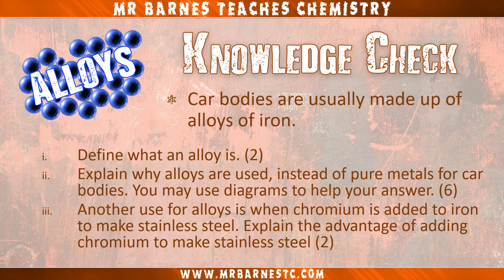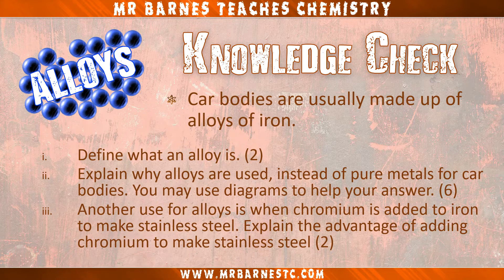Let's check how much you've picked up from the video. Car bodies are usually made up of alloys of iron. Part one: define what an alloy is — two marks. Part two: explain why alloys are used instead of pure metals for car bodies — you may use diagrams to help your answer, that's a six marker. And then another use for alloys: when chromium is added to iron to make stainless steel, explain the advantage of adding chromium to make stainless steel for two marks. Pause the video, have a go, and I'll give you the model answers when you're done.